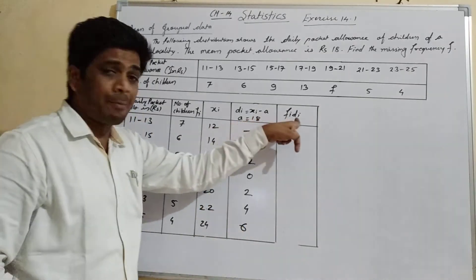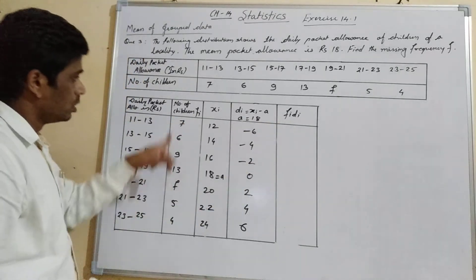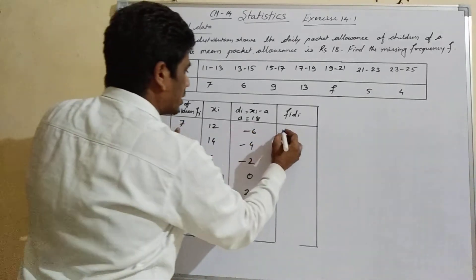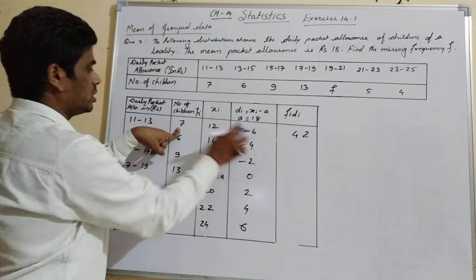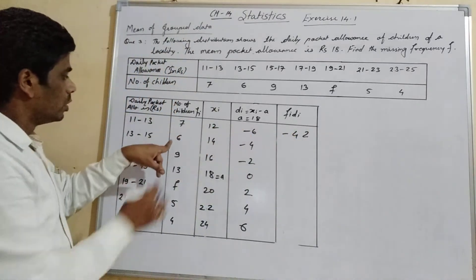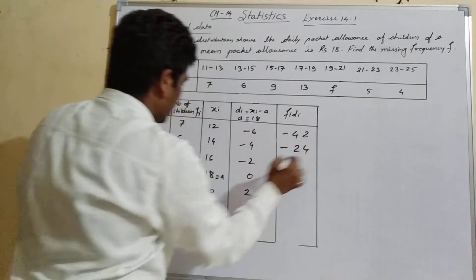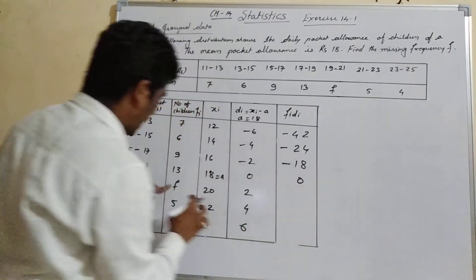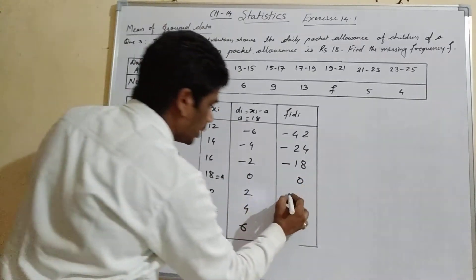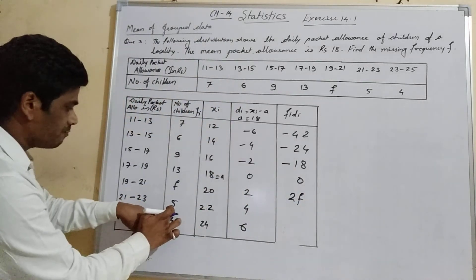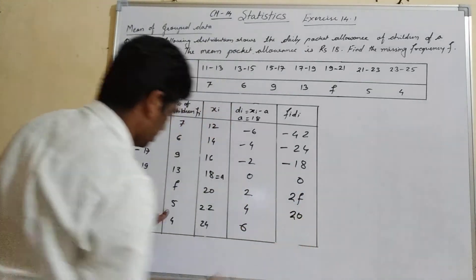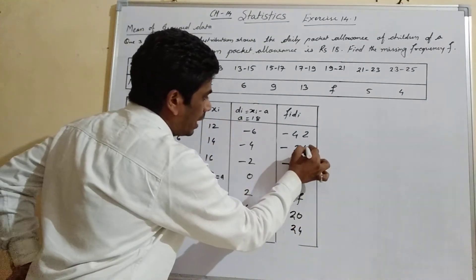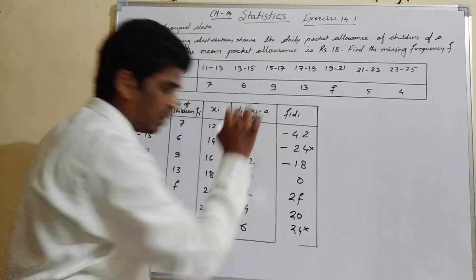Now we compute fi × di by multiplying each di with the corresponding frequency. We get: 7 × (−6) = −42, 6 × (−4) = −24, 9 × (−2) = −18, 13 × 0 = 0, f × 2 = 2f, 5 × 4 = 20, and 4 × 6 = 24. Note that −24 and +24 cancel out to 0.